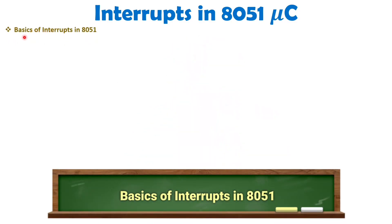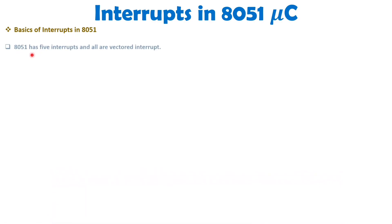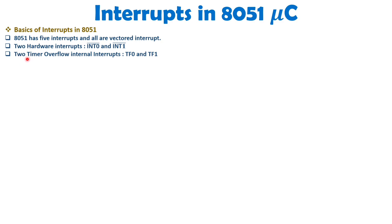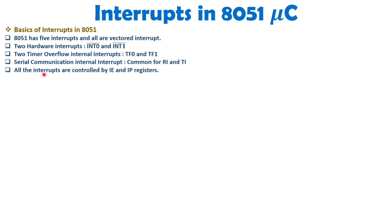Let us discuss the basics of interrupts in 8051. We have five interrupts — all vector interrupts. Two are hardware interrupts on INT0 bar and INT1 bar pins, two are software interrupts for timer overflow (TF0 and TF1), and one is for serial communication using the RI and TI bits inside the SCON register. All five can be controlled using the IE and IP registers.